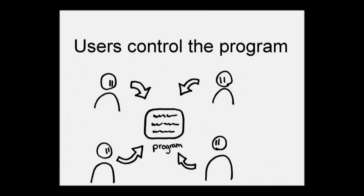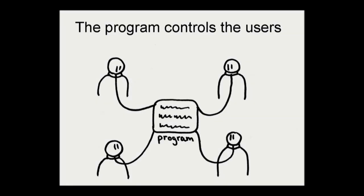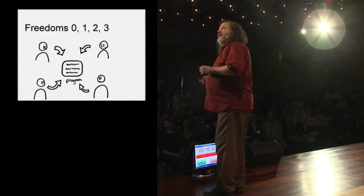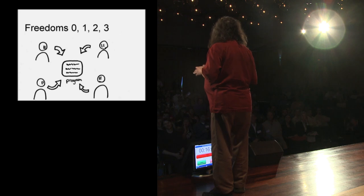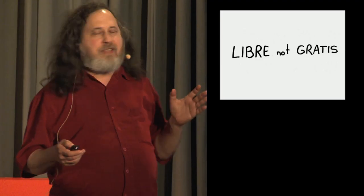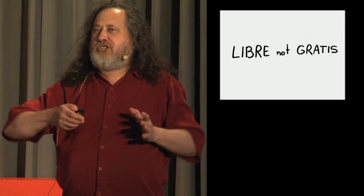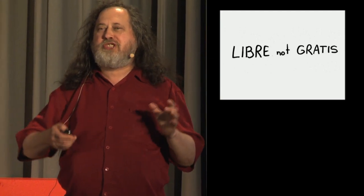With software, there are two possibilities. Either the users control the program, or the program controls the users — it's inevitably one or the other. So in order for the users to control the program, they need the four essential freedoms.